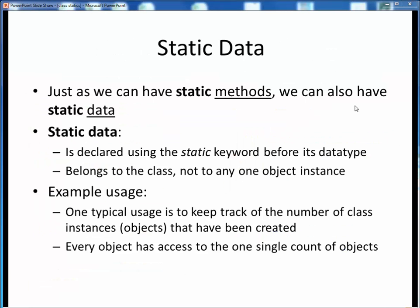We just saw an example of a class containing several static methods. It turns out that we can also have classes which contain static data as well. Data in Java programs becomes static when it is declared using the static keyword before its data type. Such static data is not specific to each individual object instance but instead belongs to the class as a whole. One typical usage of static data might be to keep track of how many individual instances or objects of that class have been created. Each time a new object instance is created, its constructor would increment that one common static count variable, and every such object would have access to that one shared count variable.